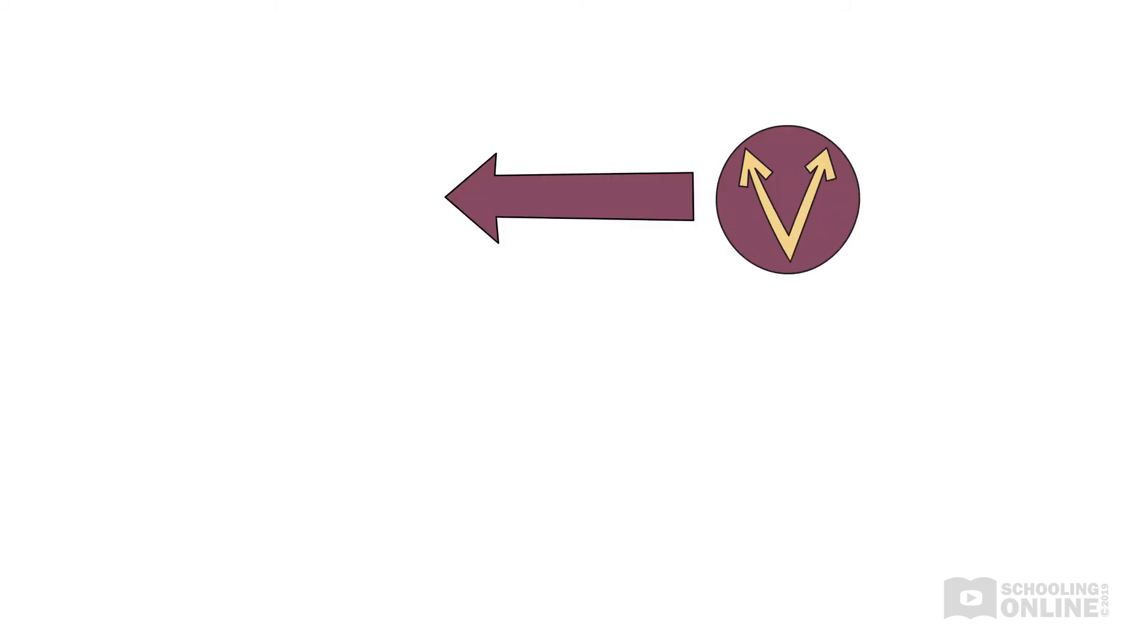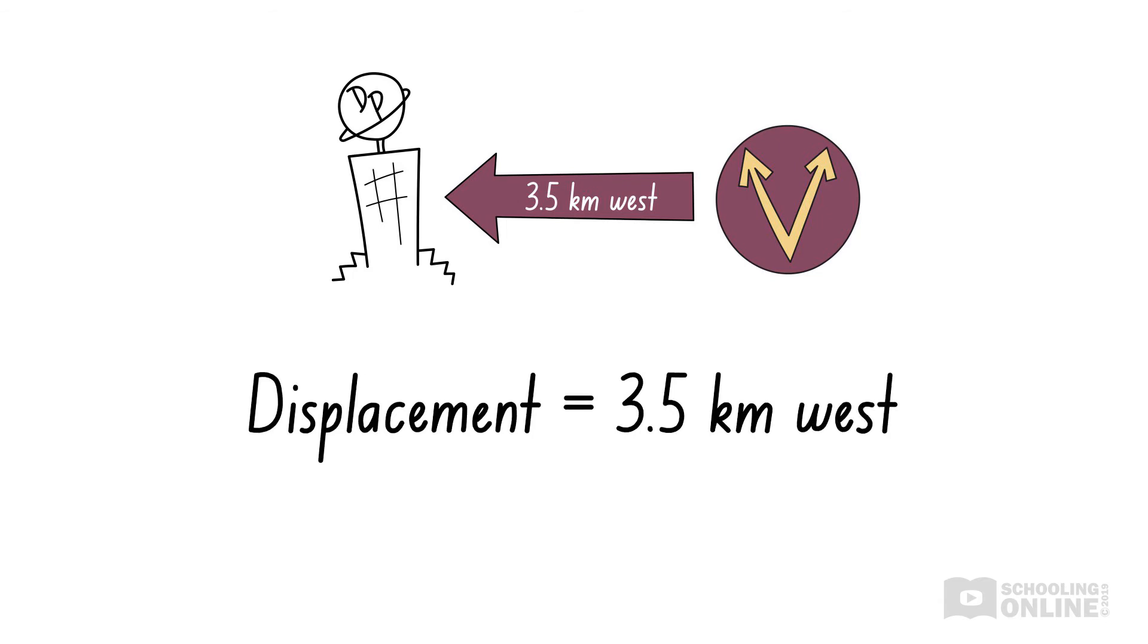As evident in this example, it is possible to add a direction to a distance and get a reasonable answer. In fact, we have found the displacement of the daily probe from Vector Man's current location. Displacement is a vector quantity which represents the distance and direction between two locations. We'll discuss this further in our upcoming video on distance and displacement.